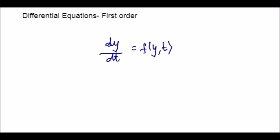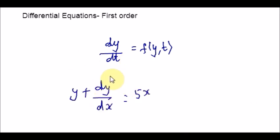The most general first order differential equation can be written as dy over dt, which is nothing but f. There is no general formula for the solution to this one. A differential equation is an equation with a function and one or more of its derivatives. Here is an example — an equation with a function y and its derivative. Here we will look at solving a special class: the first order linear differential equation.